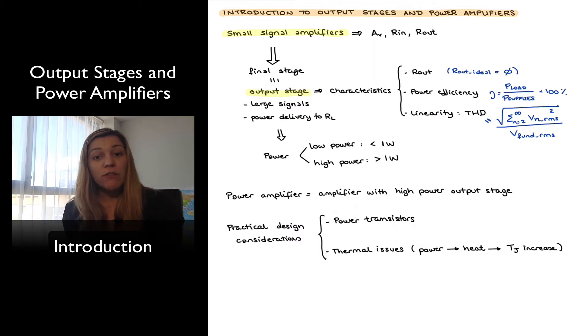Because of their particular function and characteristics there are specific performance parameters that we use for output stages such as output resistance R_out which ideally we would like it to be as low as possible, ideally zero, in order to avoid loss of signal gain as we want to have our signal delivered to the load.